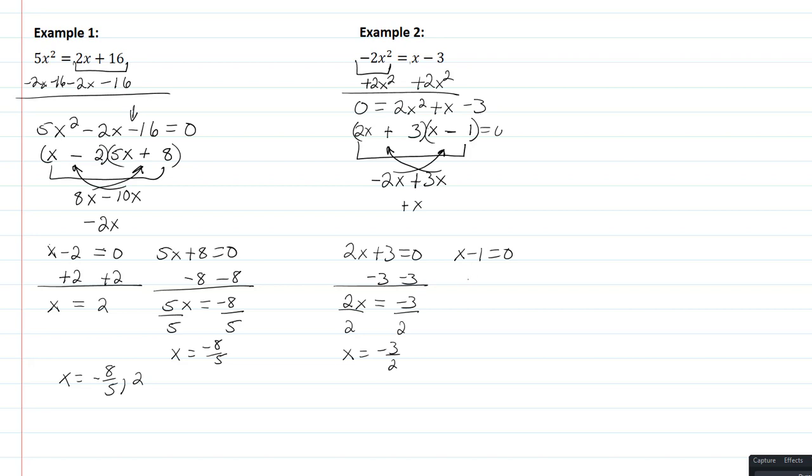Solving the other one, I'll add 1 to both sides. I get x = 1. So my solutions are x = -3/2 and x = 1, and I'm done.